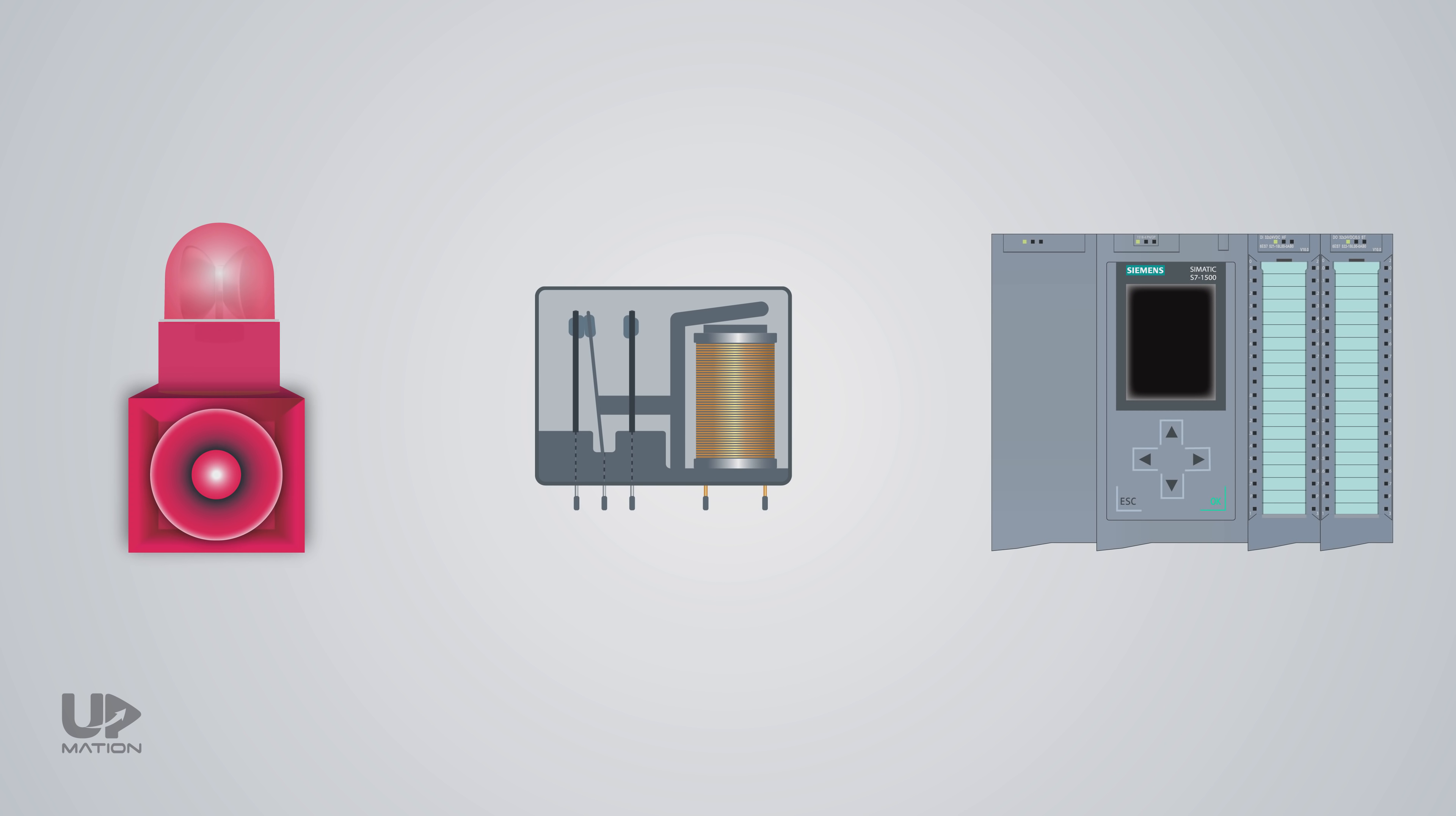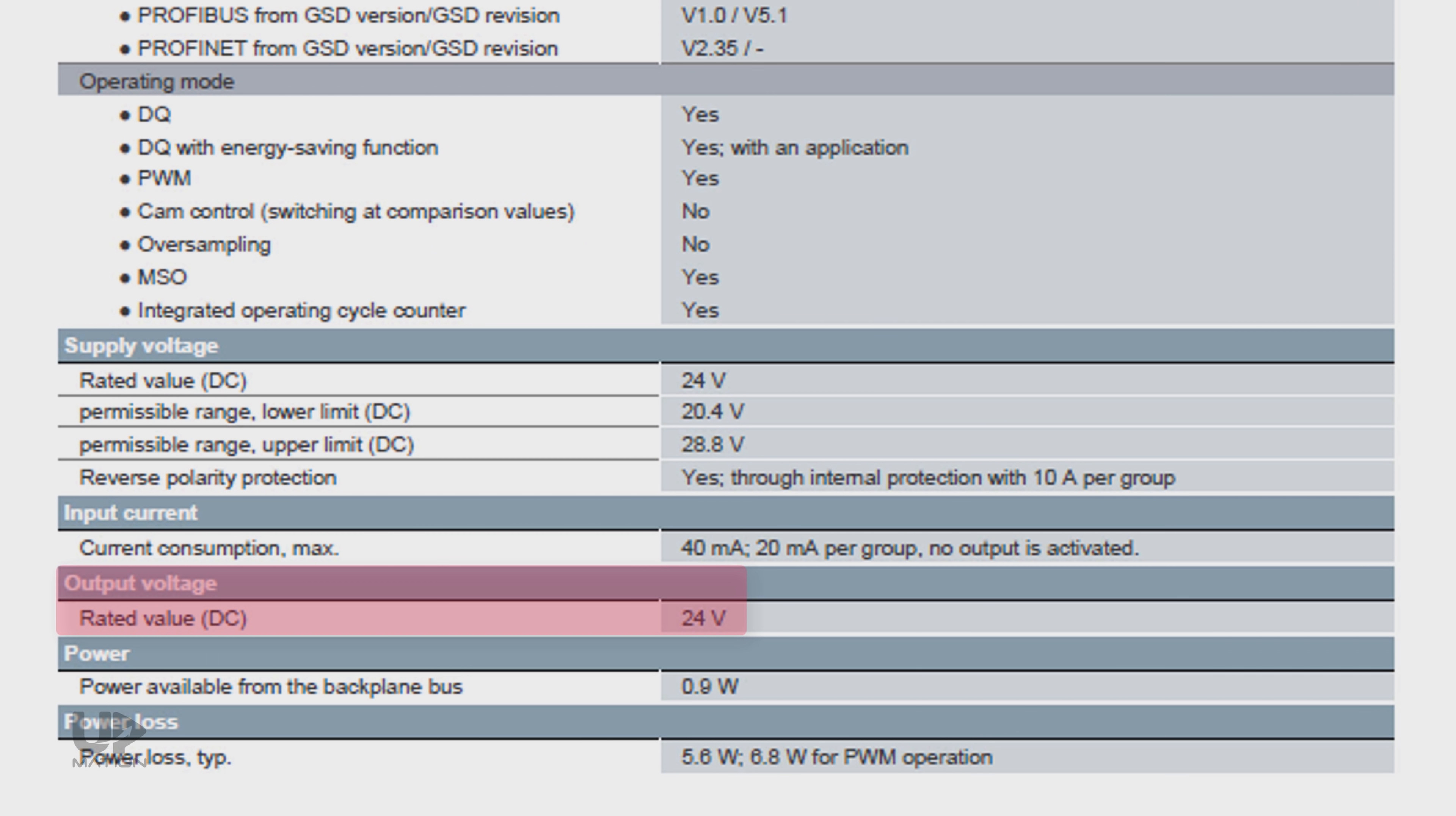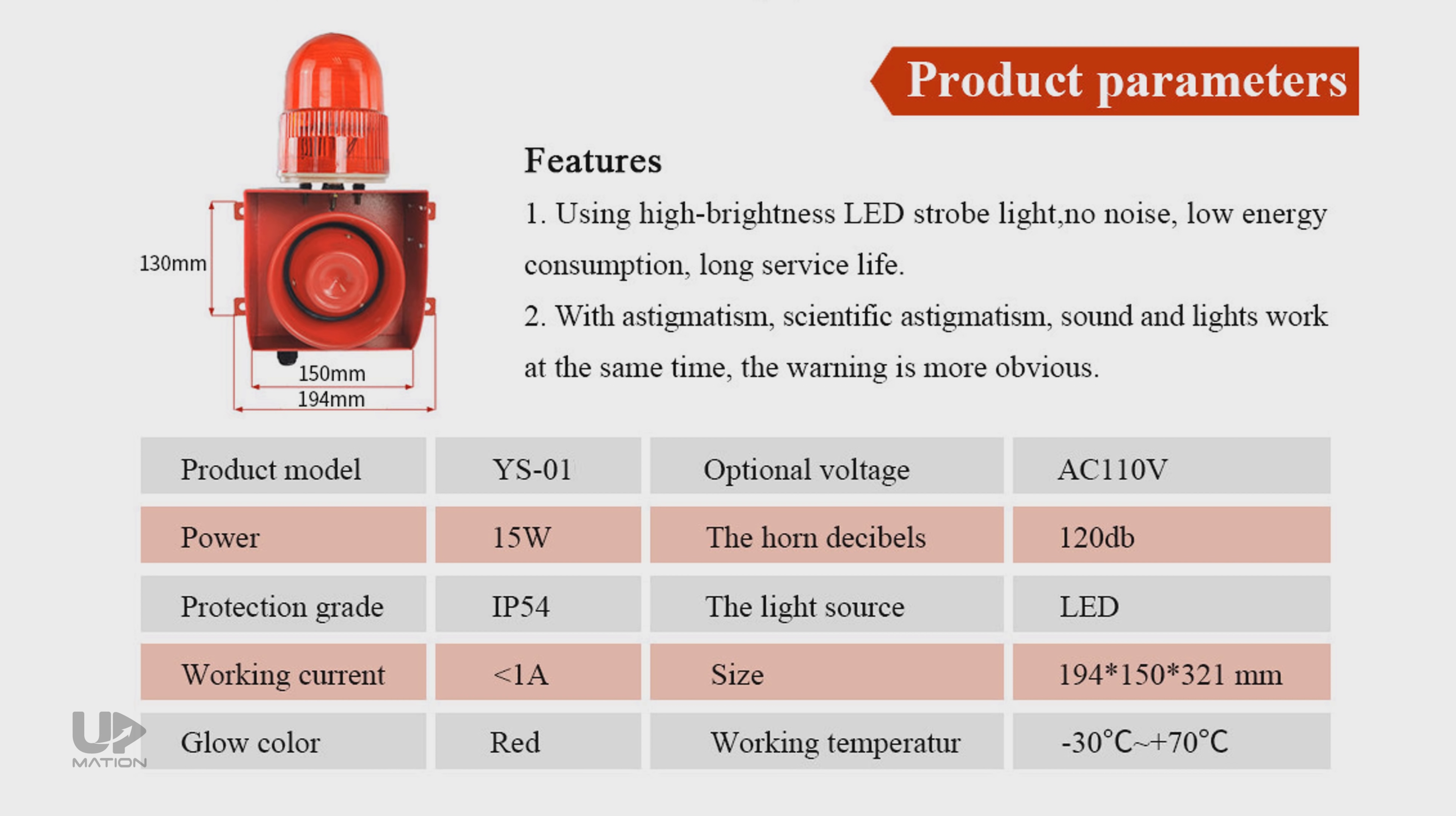For instance, if we want the PLC to turn on this siren alarm according to its logic, we should first check which control voltage signal the PLC card sends out. Let's assume it's a 24 volt DC signal. Then, we'll check the siren's power rating. For example, it is 110 volts AC with about 1 amp of rated carry current.